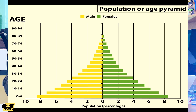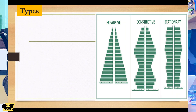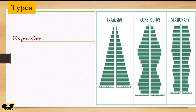The population pyramid has types, and there are trends that show how each type looks depending on what is happening in a particular area or country. These are the three major types of the population pyramid, and you can see the images look quite different from each other.